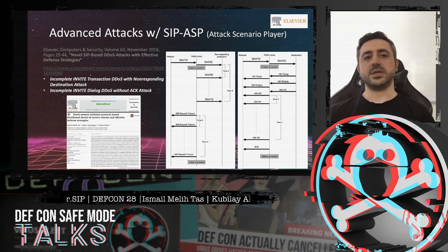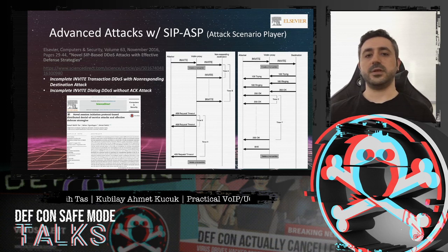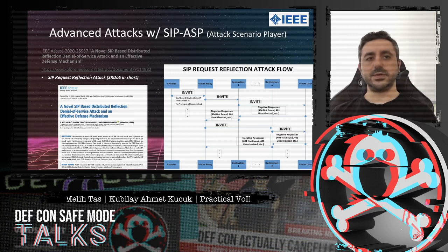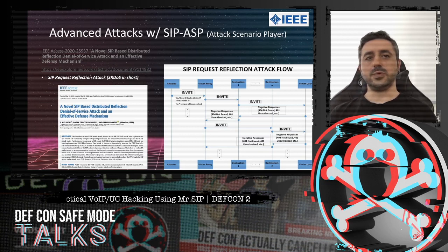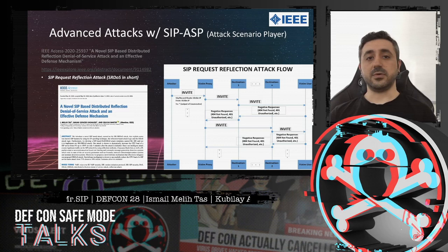In the second attack, we have no prerequisite — the target users will be registered and accessible. Since we only leave responses to us unanswered, we potentially occupy server and target client resources for a minimum of 32 seconds. There is another attack scenario developed for academic studies: SIP Request Reflection DoS, or SRDOS. Just like the ICMP Smurf attack, we worked on methods that could reflect SIP requests and responses, combining weaknesses of some SIP headers with IP spoofing. This work was published in IEEE Access Journal.